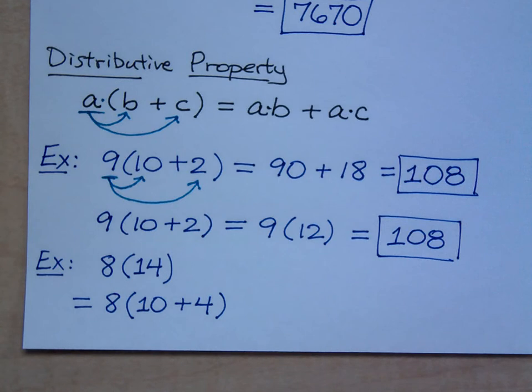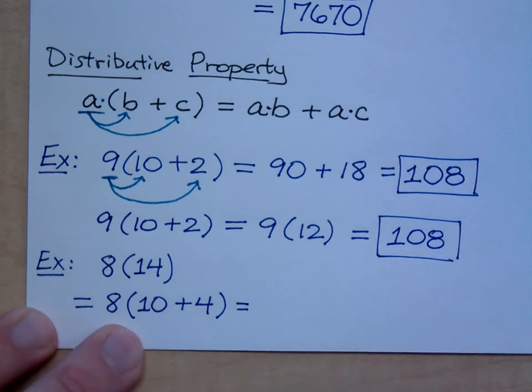Yeah, 10 plus 4 is 14, but why would I break it up? Because 8 times 10 and 8 times 4 are things that I know much more readily than 8 times 14. 8 times 14 is not really one of those things that I studied. Right? So I can do this. If I use the distributive property, what do I get?